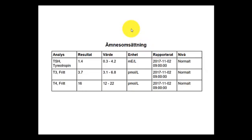This is a thyroid panel from a different country. We see the TSH is looking pretty good here at 1.4, using a range of 0.3 to 4.2. But as I mentioned, you also need to look at the optimal range — so if this were 3.0, it would still be within range but outside the optimal range. We see free T3 at 3.7, on the lower side of the range of 3.1 to 6.8 picomoles per liter, and free T4 at 0.16, which is within range here.